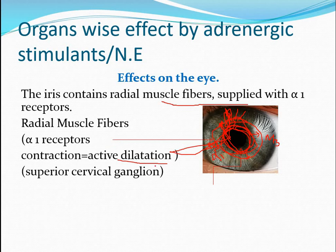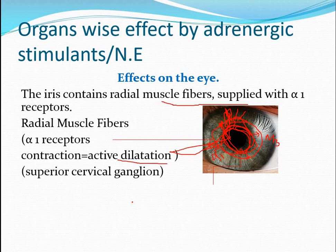In the case of M3 receptors, acetylcholine comes and attaches, giving a muscular tone to the circular muscle fibers. These circular muscle fibers then maintain their structure. The third cranial nerve supplies these M3 receptors.